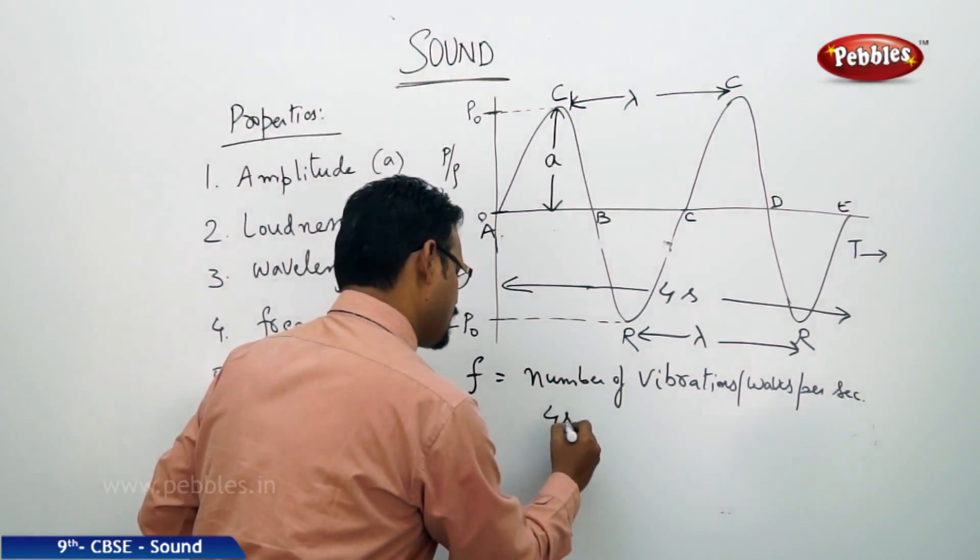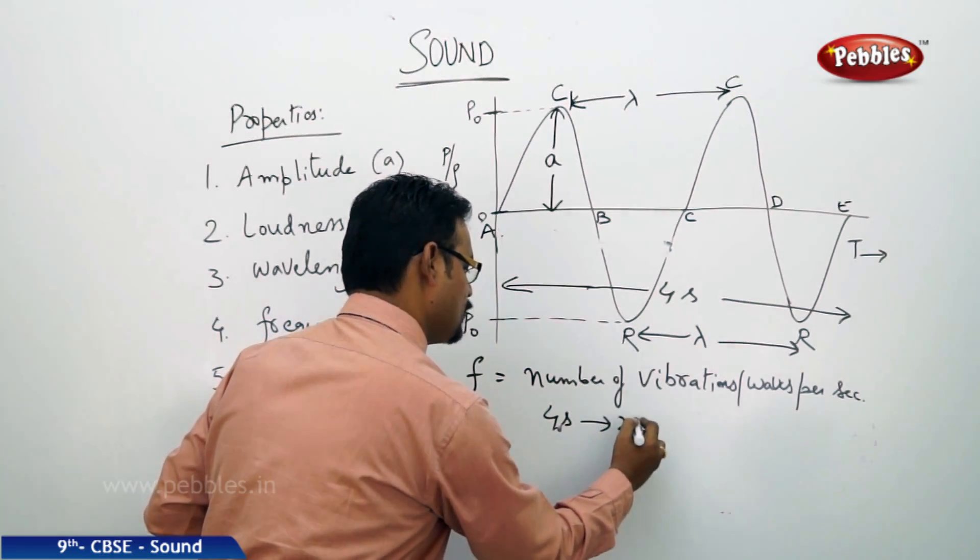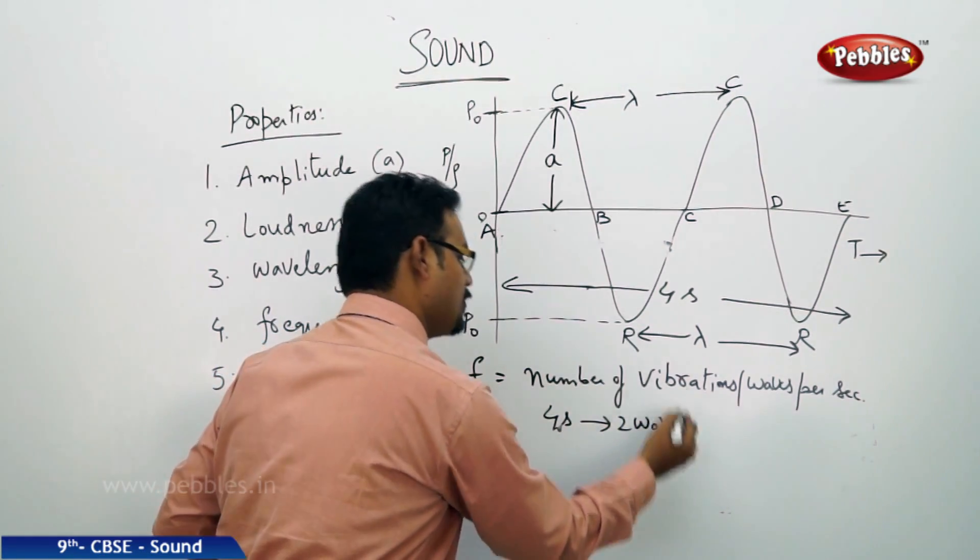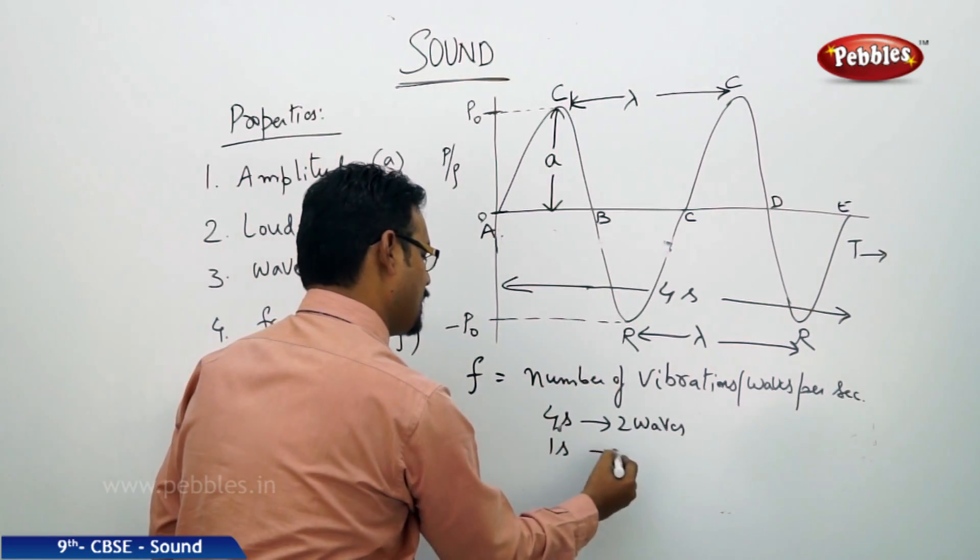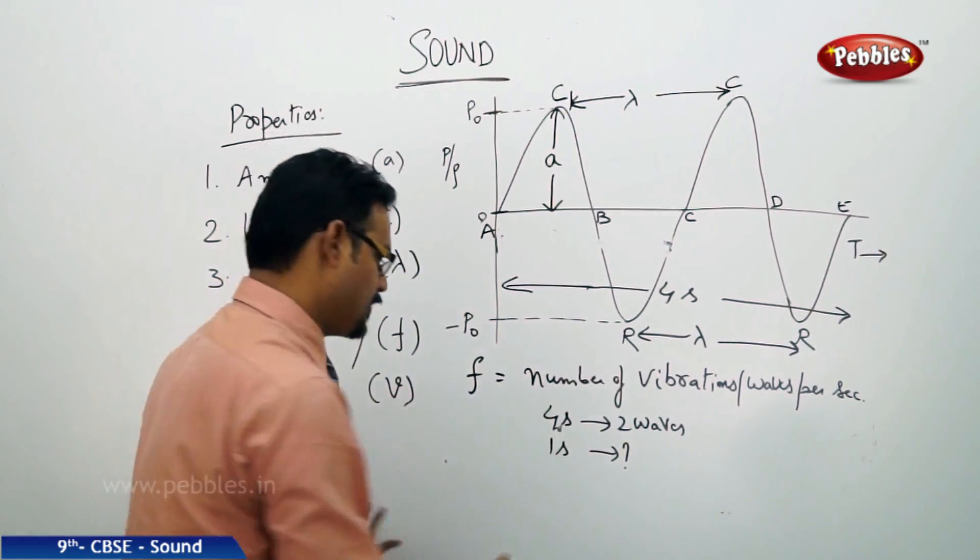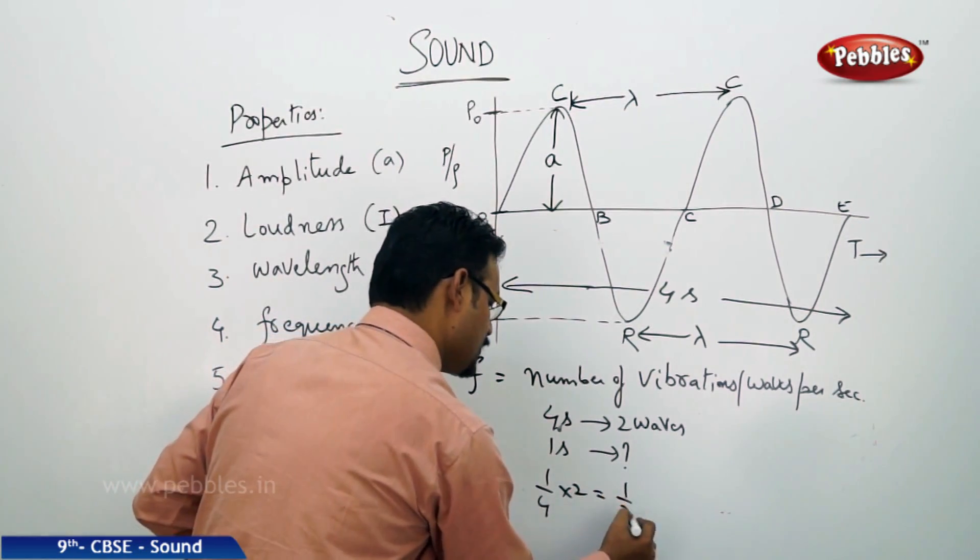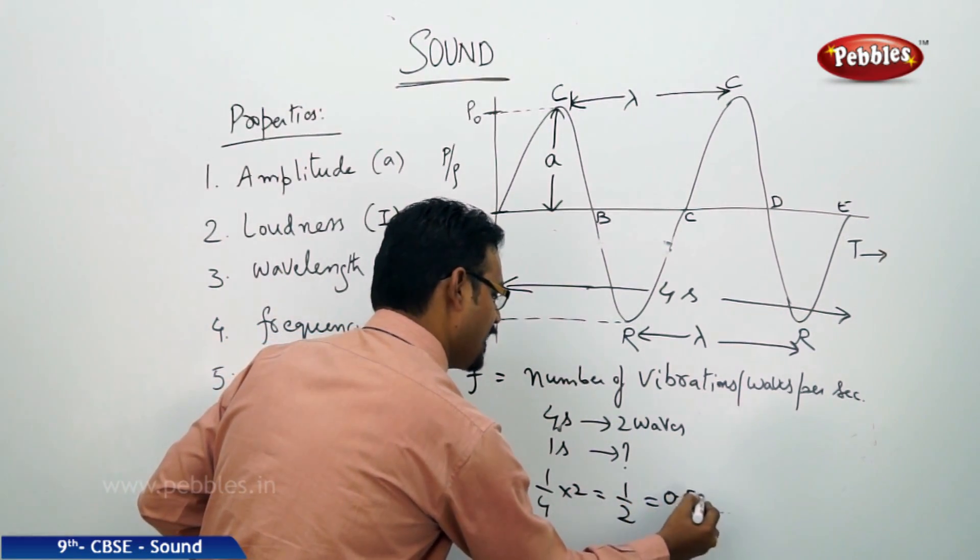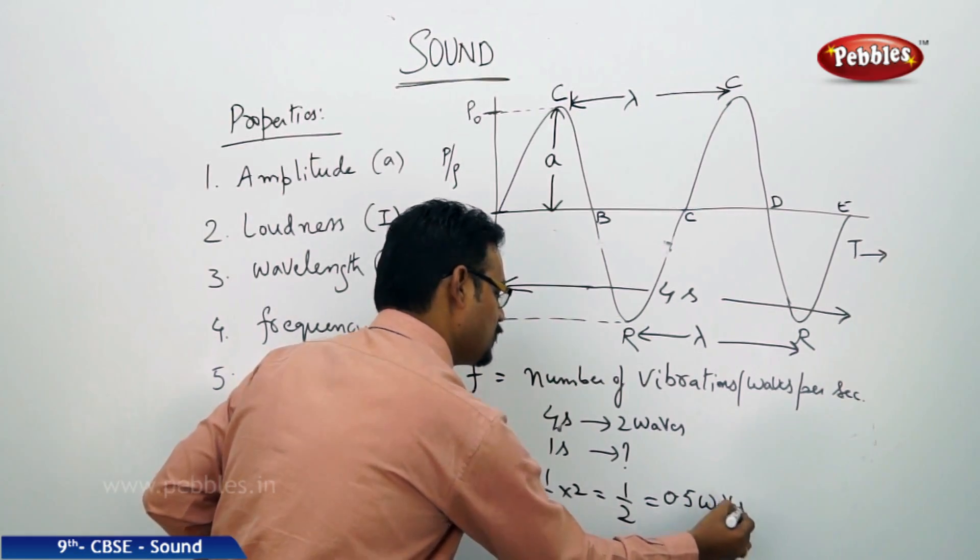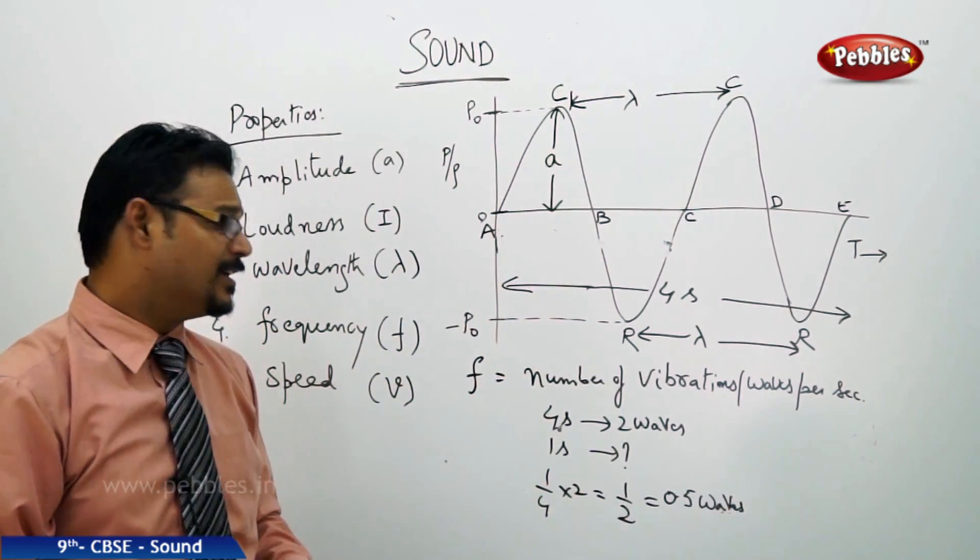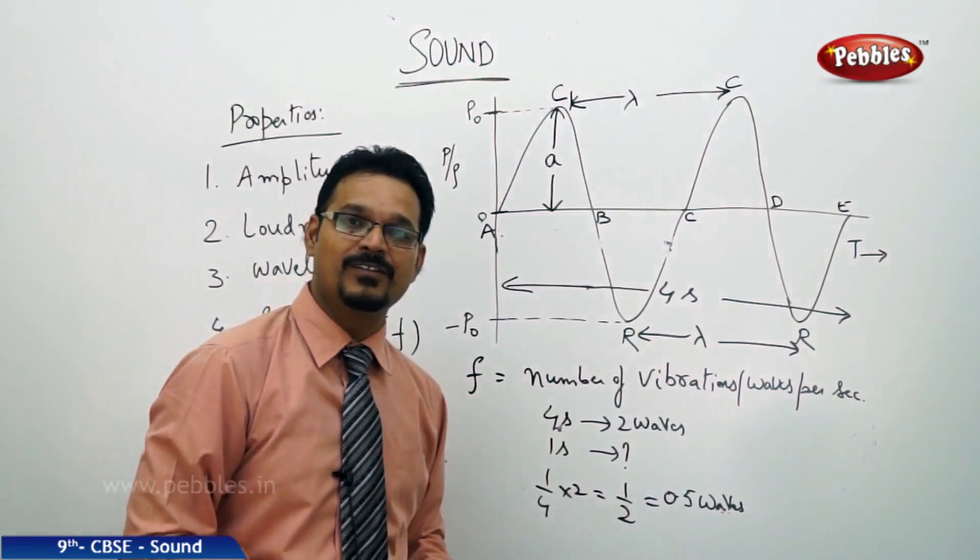Let me write. In four seconds, you produce two waves according to this diagram. So, in one second, how many waves you can produce? So, one by four into two. How much you get? One by two, which is 0.5 waves. So, half wave. 0.5 is the half wave. That means in one second, you can produce half wave. That is the frequency.